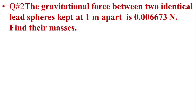Now we solve the second numerical. In the second numerical, the force of gravitation between two identical spheres kept 1 meter apart is 0.006673 Newton. We read the statement carefully: two identical masses means both masses are the same. The distance between their spheres is D equal to 1 meter, and the given force F is equal to 0.006673 Newton.